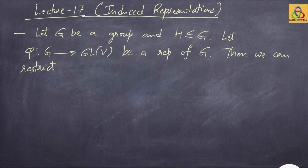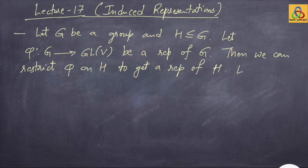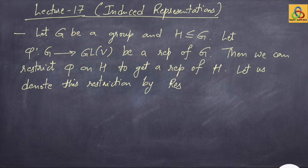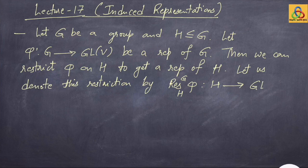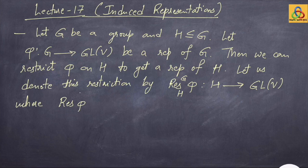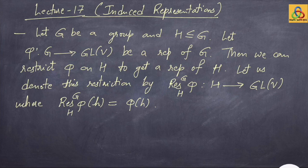We can restrict phi on H to get a representation of H. We denote this restriction by the standard notation: restriction of phi from G to H. It is a map from H to GL(V), and it acts on any little h as simply phi of h. Obviously it is a homomorphism because restriction of a group homomorphism is again a group homomorphism.